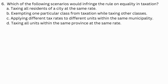Number 6. Which of the following scenarios would infringe the rule on equality in taxation? a. Taxing all residents of a city at the same rate. b. Exempting one particular class from taxation while taxing other classes. c. Applying different tax rates to different units within the same municipality. d. Taxing all units within the same province at the same rate.